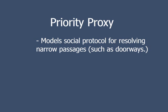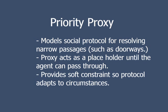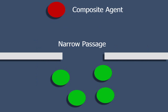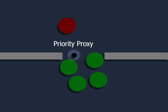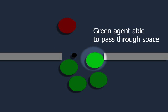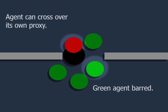The priority proxy allows us to model social protocols. The proxy sits at a contested location and reserves it for its parent. It acts as a soft constraint, permitting oncoming agents through as reasonable. Here we see a red composite agent with a priority proxy. As the agent approaches the doorway, the proxy grows, holding the agent's place available. The green agents must plan around the proxy, thus giving priority to the red.